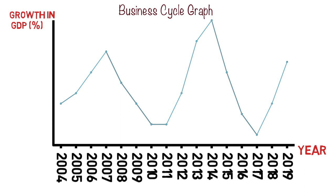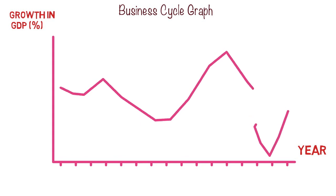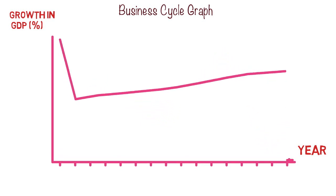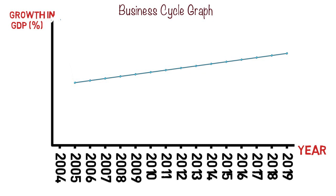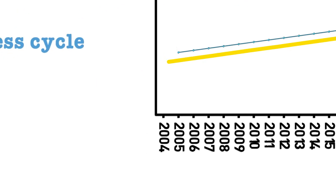What governments and central banks would like to achieve is a smoother business cycle. This would entail monetary and fiscal policies that ensure smooth, stable economic growth — increasing over time at a continuous rate without the fluctuations which cause recessions and can lead to high unemployment levels.